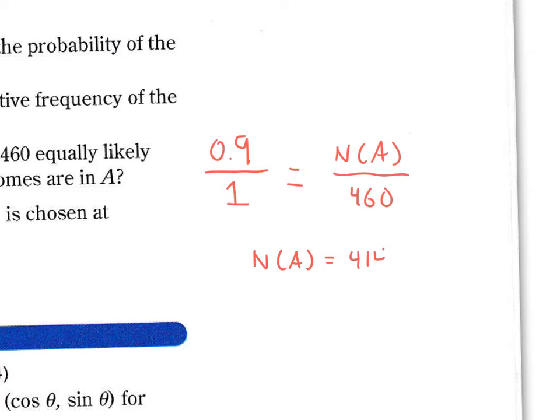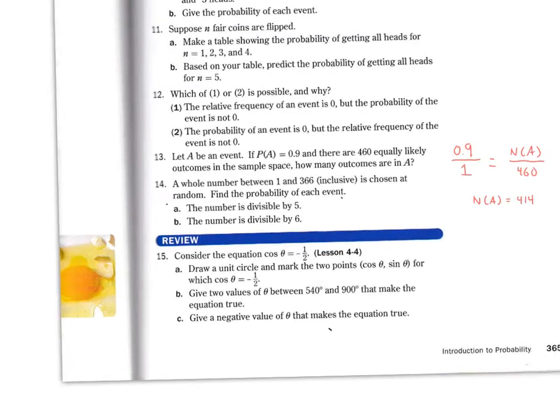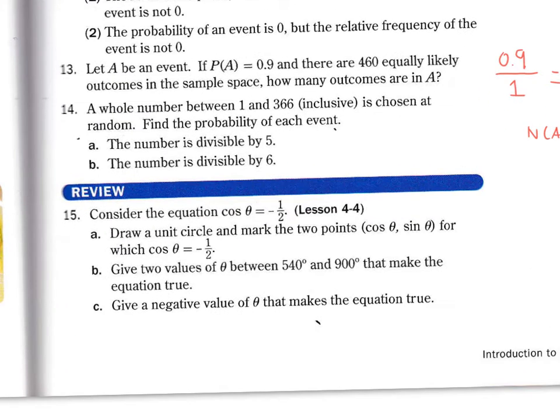So that's number 13. Number 14, let's look at that. A whole number between 1 and 366 inclusive, so that means including 1 and 366, is chosen at random. Find the probability of each event that the number is divisible by 5.